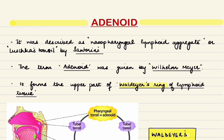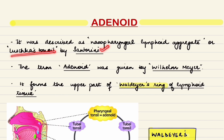The adenoid was described as a nasopharyngeal lymphoid aggregate, or Lushka's tonsil, by Santorini, and the term 'adenoid' was given by Wilhelm Meyer.